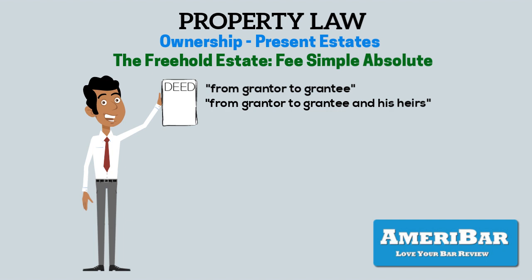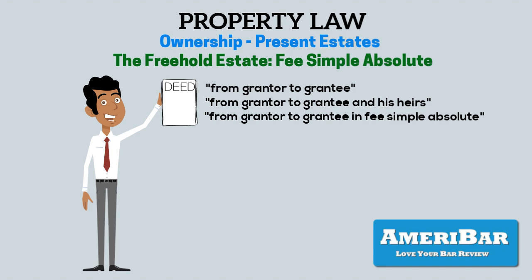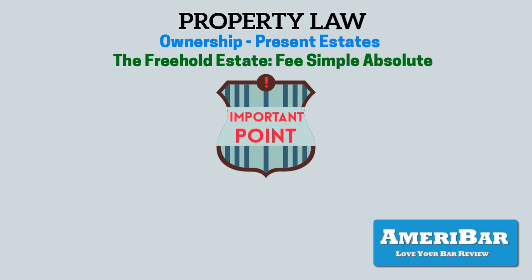For example, a conveyance may also state "from grantor to grantee in fee-simple absolute" or other similar language that makes it clear a fee-simple is being conveyed. The most important point to remember is that a conveyance of a fee-simple interest is neither qualified in any way — such as limiting the manner in which the grantee may use the property — nor limited by any other interest, such as a future interest.